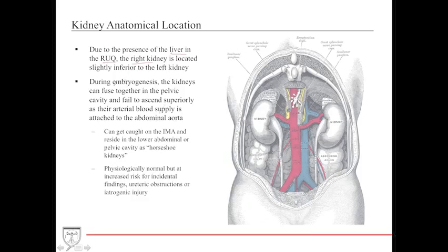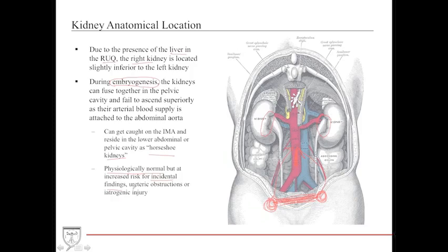It's also important to discuss the embryogenesis of the kidneys. The kidneys are separate organs, but in certain instances they may fuse. They arise in the lower abdominal or pelvic cavity attached to the abdominal aorta. As the fetus grows and the aorta elongates, it carries the kidneys upward. However, if the kidneys are fused, they can get caught on the inferior mesenteric artery, fail to ascend, and are then called horseshoe kidneys. Physiologically they're normal, but they may be an incidental CT finding, carry an increased risk of ureteric obstruction, or cause iatrogenic injury during surgery.